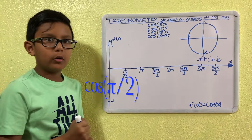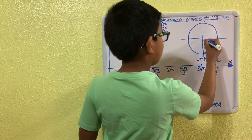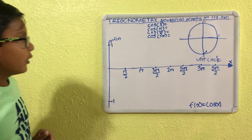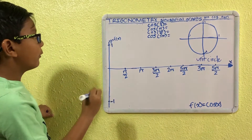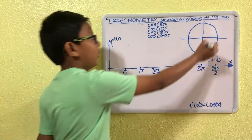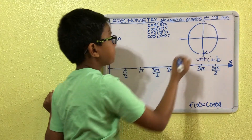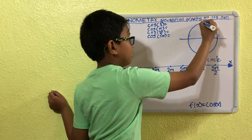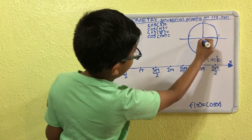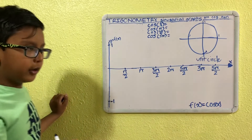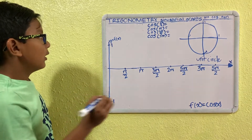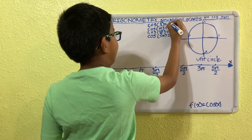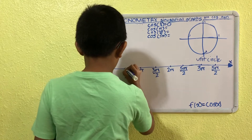Now, if you don't know, cosine is essentially the length of the line from here all the way to here. On pi over 2, pi over 2 is actually a quarter of a circle the way around. So this is going to be 1, and then if we have a line here, the length from here to here is 0. So essentially, cosine of pi over 2 is 0. And so, we can plot that on our graph.